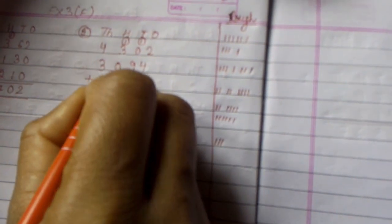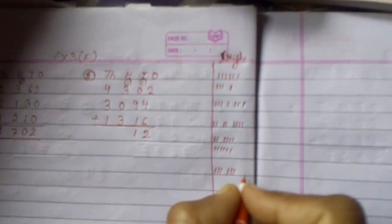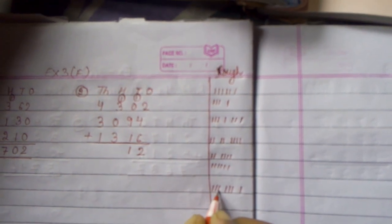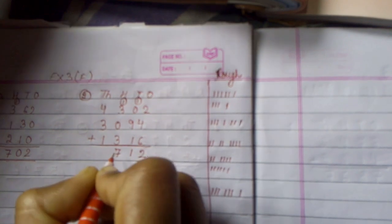Now 3: 1, 2, 3. See here, one more 3 is there because here is 0, so no need to make line. 1, 2, 3. And 1 is carried, number 1. Now we will add all together: 1, 2, 3, 4, 5, 6, 7. So here we have written 7.